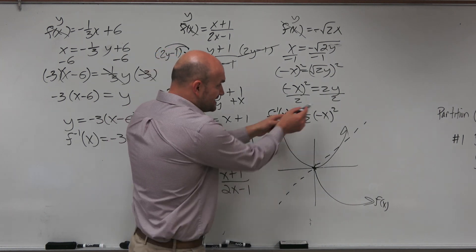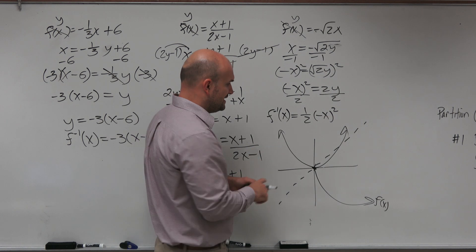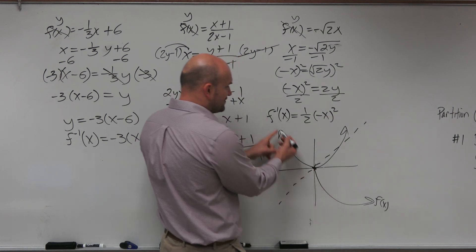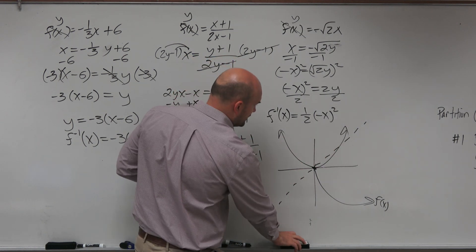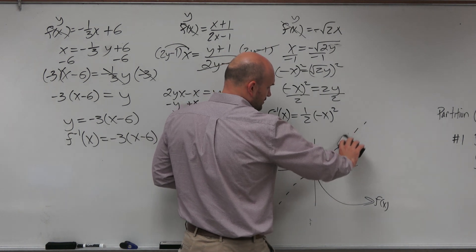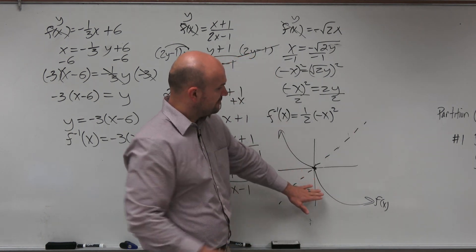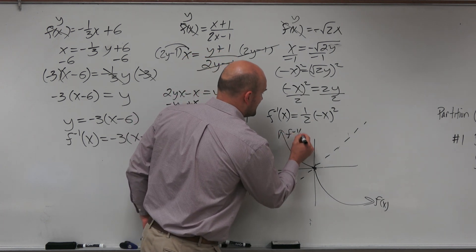So our inverse is algebraically correct, but what we need to do is we need to apply a restriction. We need to either take, should we take the positive version of the graph, or sorry, the negative version, or the positive version? And hopefully, visually, you can kind of see if we erase the positive version, that now we have a function, an inverse, that is a reflection. Right? So we can say this is the f inverse of x.